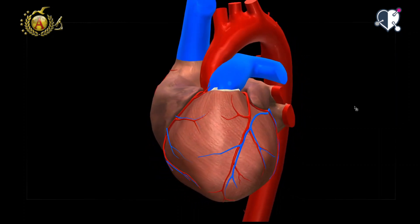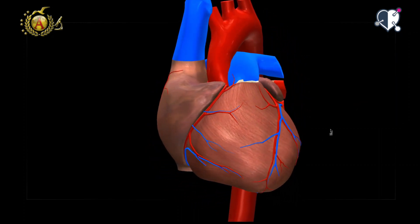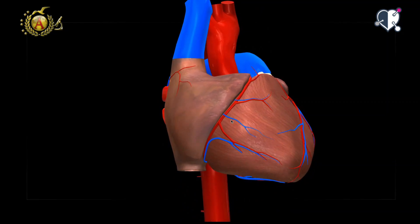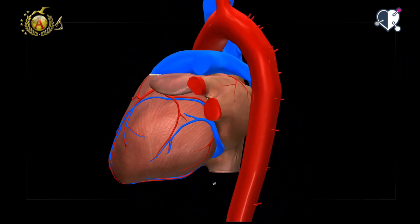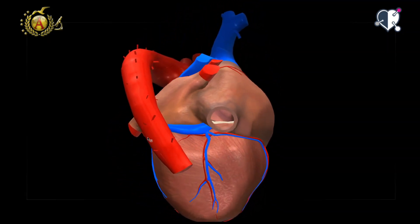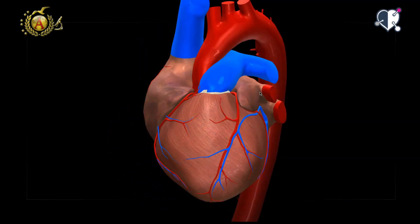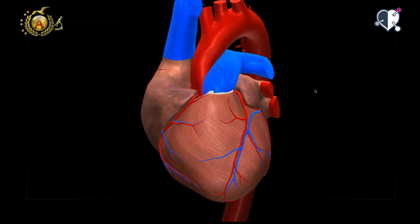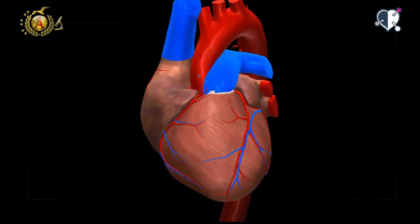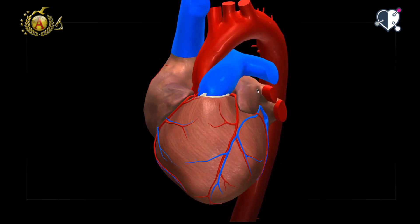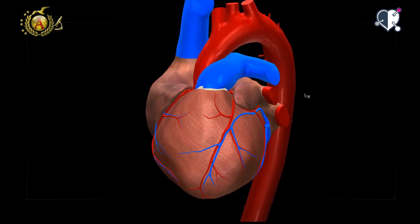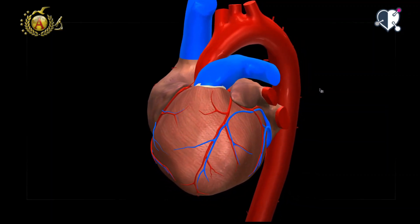Several sulci cross the external surface of the heart. The easiest to spot is the atrioventricular sulcus, which divides the atrial part from the ventricular part. It is very visible on the posterior part of the heart but less so on the anterior face, due to the outlets of the pulmonary trunk and aortic artery that cover its course, and the atrial auricles which hide it for the most part. There is also an interatrial sulcus that is hardly visible.